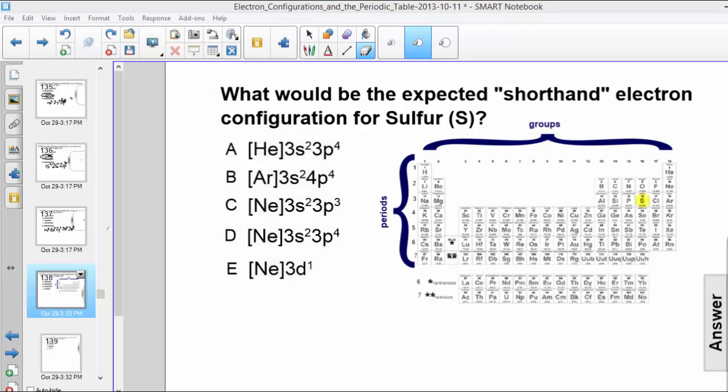Hi, let's answer this question. What would be the expected shorthand electron configuration for sulfur?